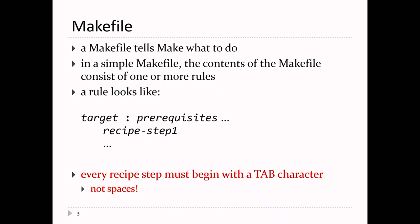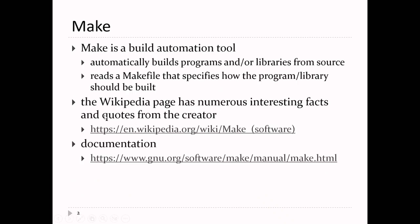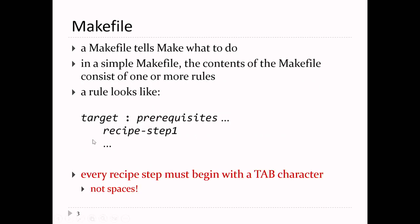A makefile tells make what to do. It consists of rules. A rule has a target, a colon, prerequisites, and then the recipe steps needed to build the target. The recipe must be indented with a tab character - not spaces. If it's spaces, make doesn't work properly. The creator of make regrets this design decision, but we're stuck with it.